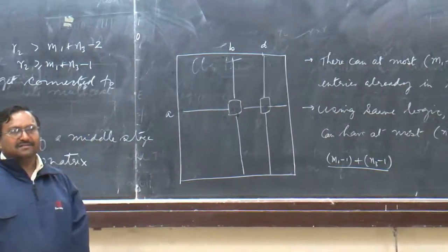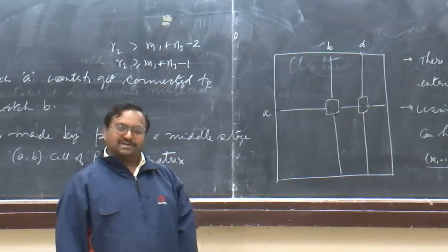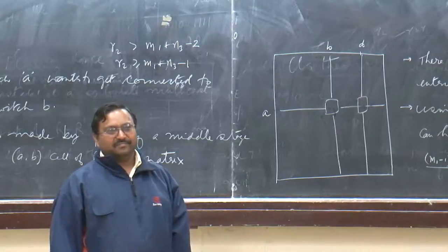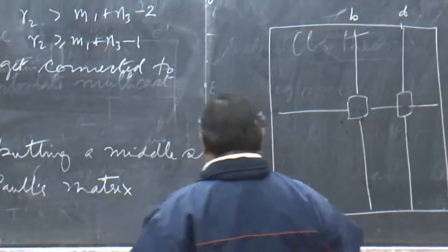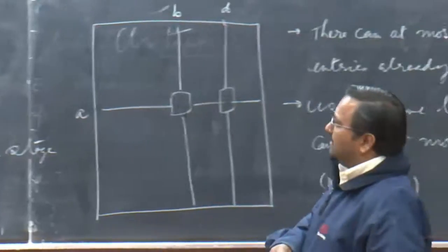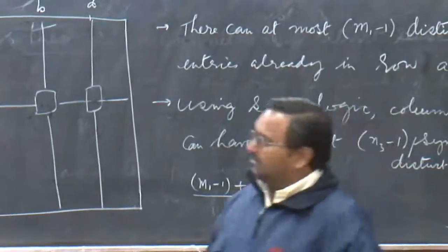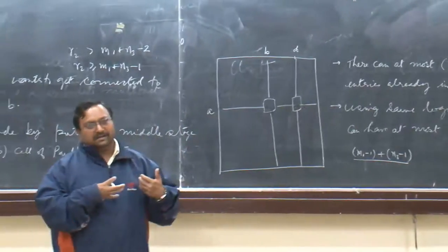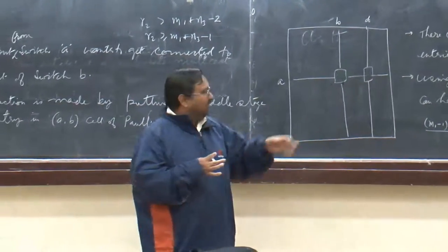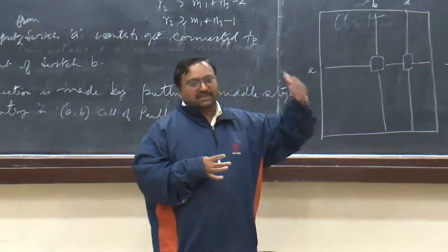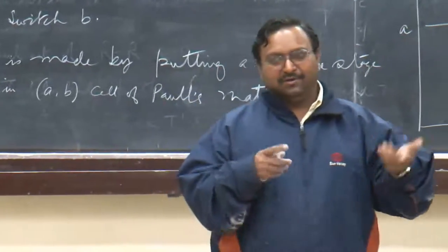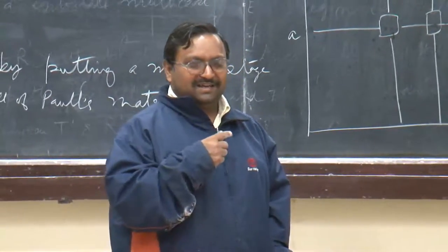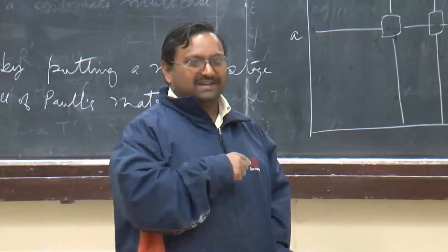This means R2 must be greater than or equal to M1 plus M3 minus 2, which with the equal-to condition gives R2 greater than or equal to M1 plus M3 minus 1. For the symmetric case using M instead of N, this becomes 2M minus 1 — the same condition stated earlier. This finishes the Clos theorem. For multicast the condition remains valid, but the sufficiency argument for multicasting needs further elaboration in the next lecture. The proof so far is strictly for unicast.